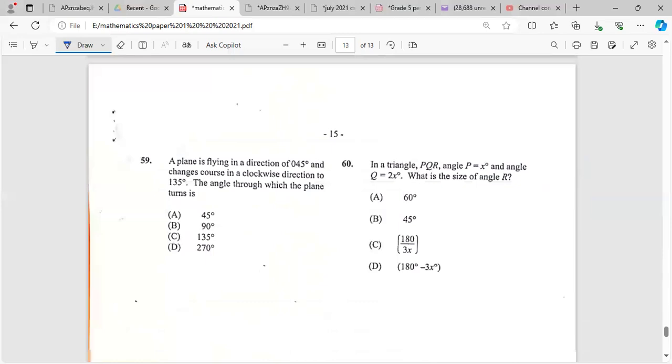A plane is flying in direction of 45 degrees and changes course in a clockwise direction to 135. The angle which the plane turned is 135 minus 45, which gives us 90 degrees. Item 60, last one: in triangle PQR, angle P equals x, angle Q equals 2x. What is the size of angle R? All three angles add up to 180. So we add these and subtract from 180. That's 180 minus 3x.